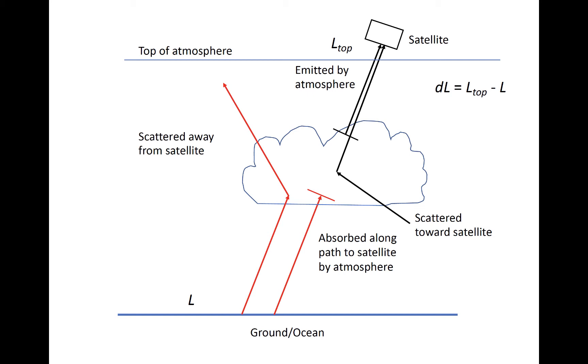However, the cloud emits a different amount of radiation at the same wavelength, and it can scatter radiation, initially not moving toward the satellite, into the direction of the satellite.